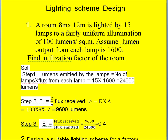The first problem: a room with 8 meters length and 12 meters width is lighted by 15 lamps to a fairly uniform illumination of 100 lumens per square meter. Assume the lumen output from each lamp equal to 1600. Find the utilization factor of the room.